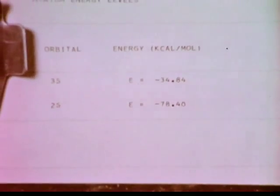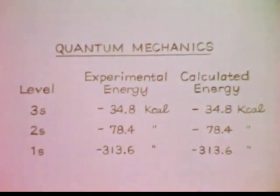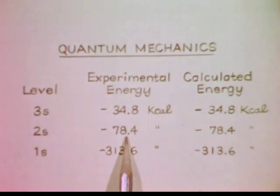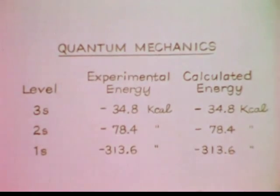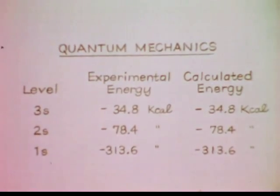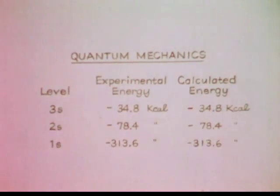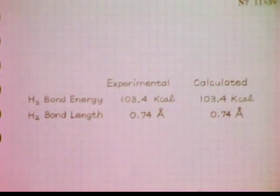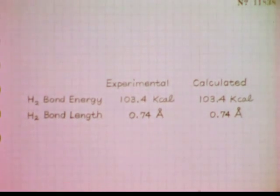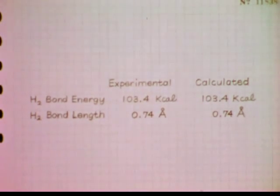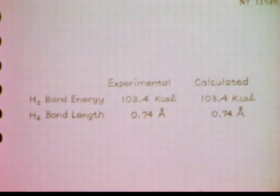Let's compare these calculated energies with the experimentally determined energies of the hydrogen atom. Agreement is excellent. Thus we see that quantum mechanics provides an explanation for the specific energies observed for the hydrogen atom. Because quantum mechanics also confirms all other properties of the hydrogen atom that can be measured, we believe the results quantum mechanics gives for those properties that are more difficult to measure.